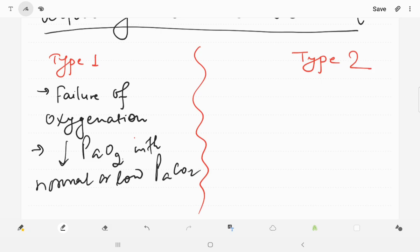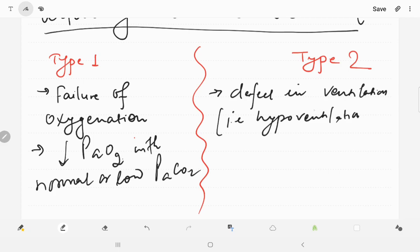However, in Type 2 respiratory failure, there is a defect in ventilation. That is, there will be hypoventilation. It is characterized by decreased partial pressure of oxygen with increased partial pressure of carbon dioxide.